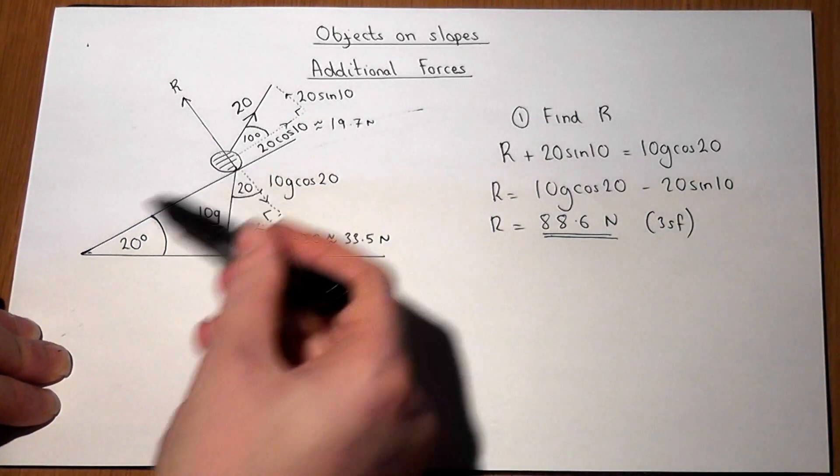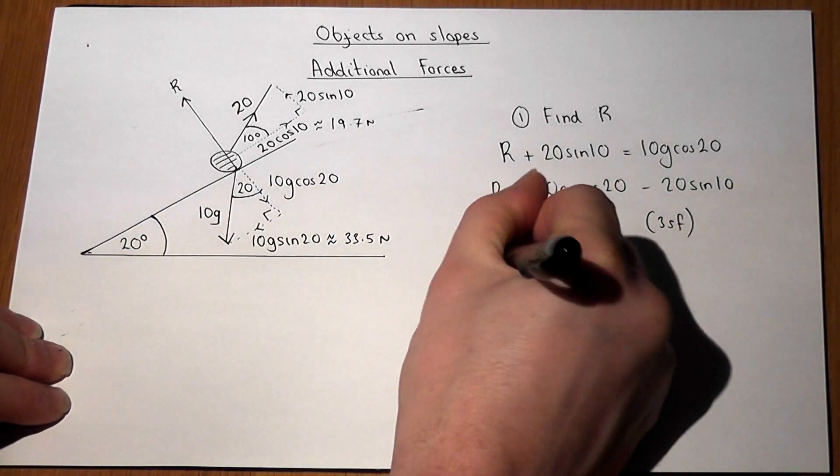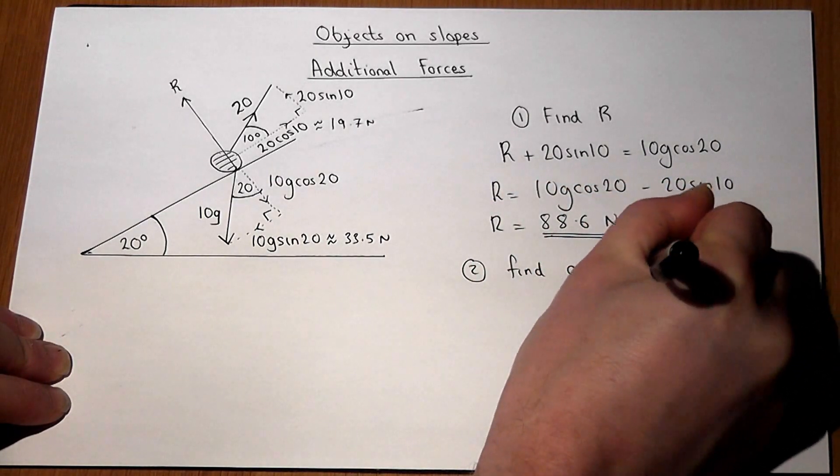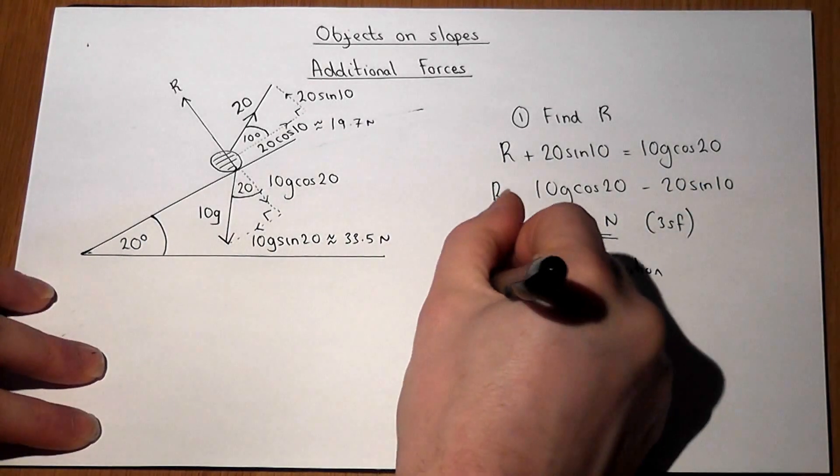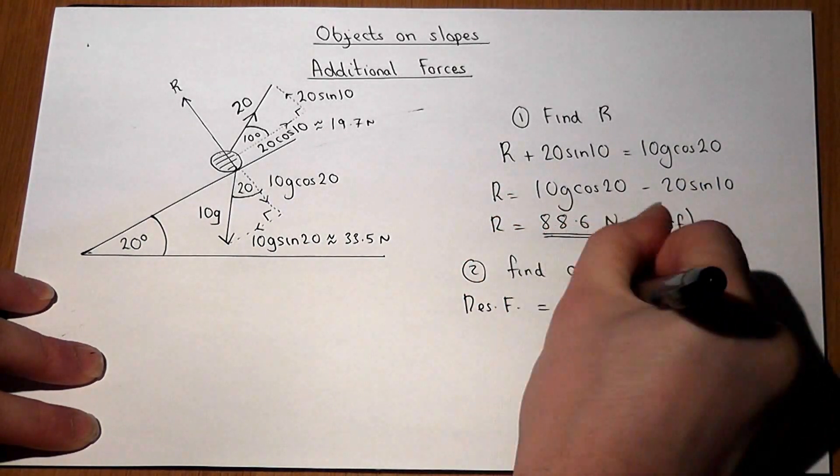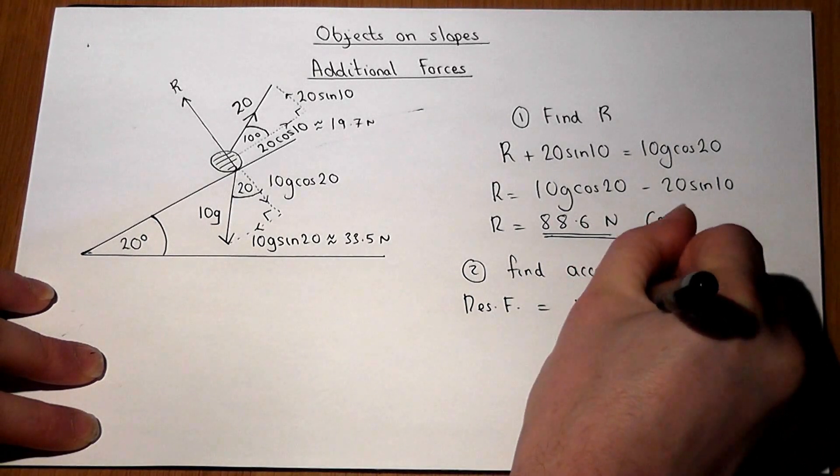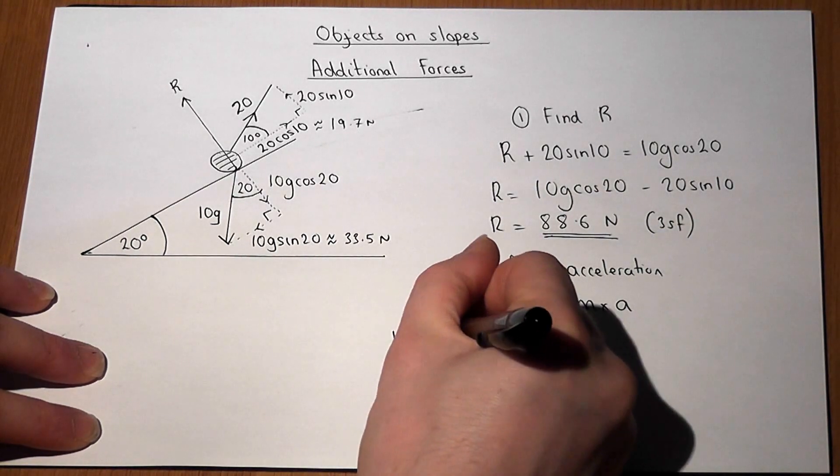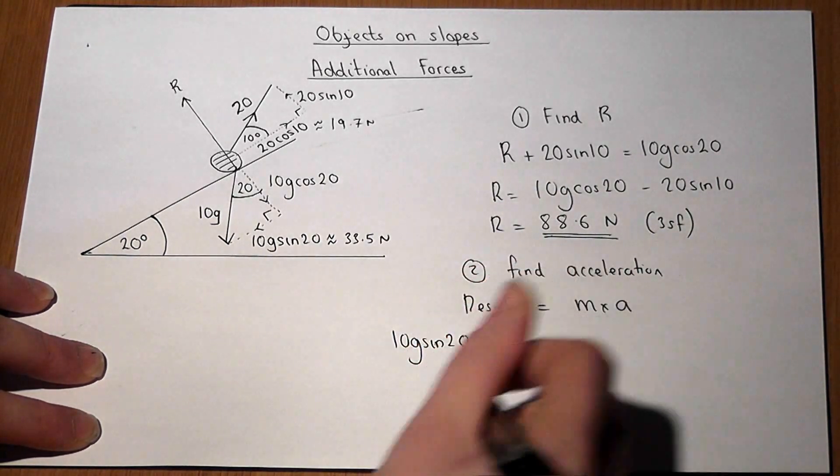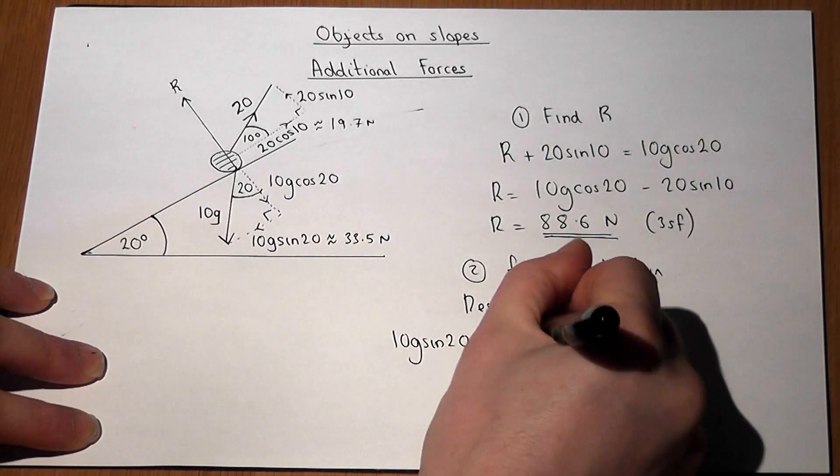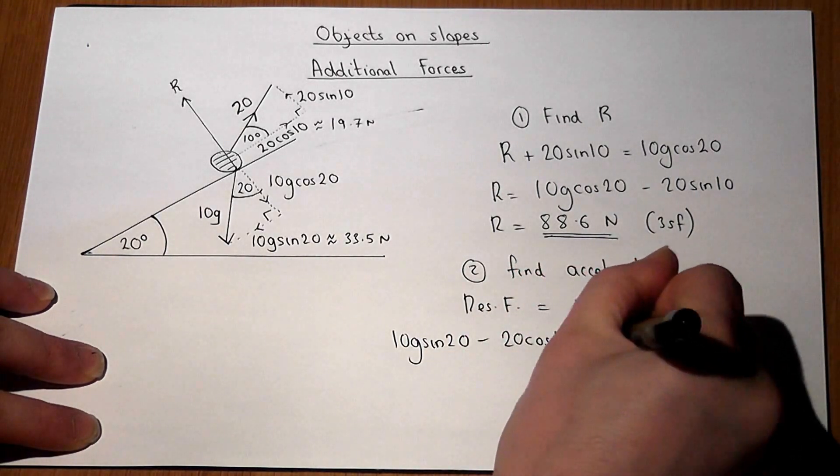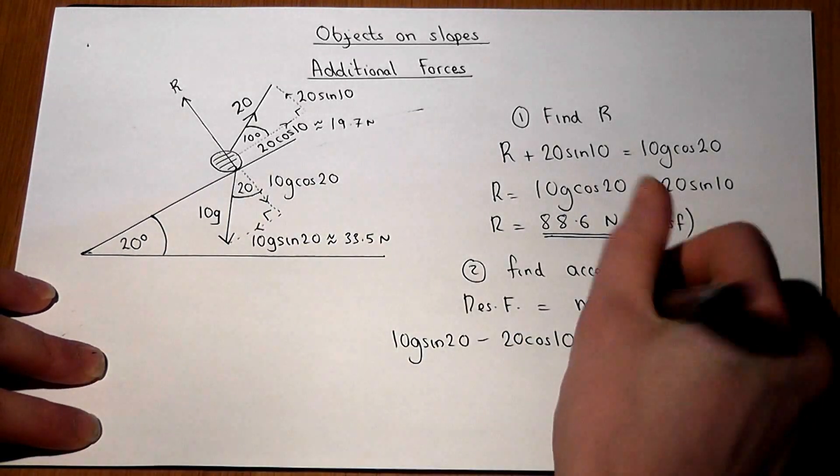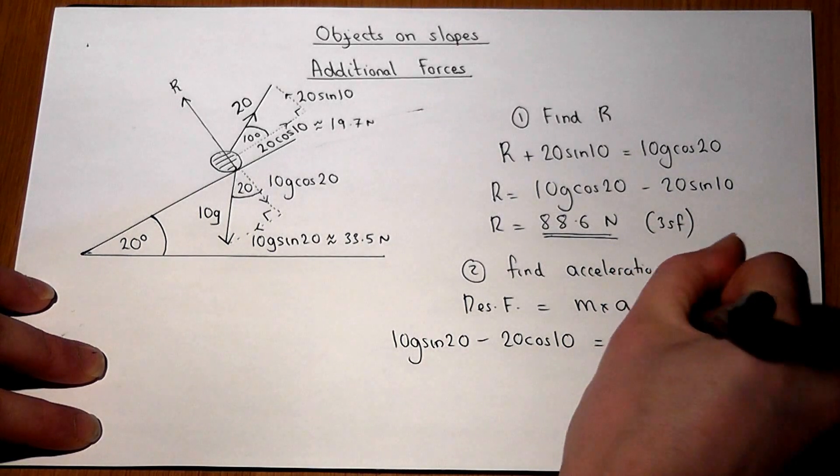the object must be trying to move down the slope. So to find the acceleration, we can use Newton's law. The resultant force must equal M times A. Now, the resultant force down the slope must be the 10g sin 20 minus the 20 cos 10. And that must equal the mass. The weight was 10g, so the mass must equal 10 lots of A.